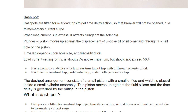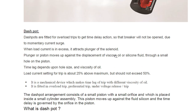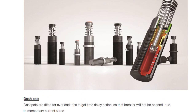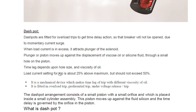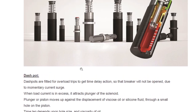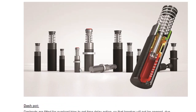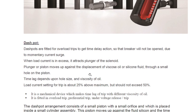Dashpot is a safety device. When load current is in excess, it attracts the plunger to the solenoid. The plunger or piston then moves up — as you can see in the diagram. The plunger or piston moves up against the displacement of viscous oil or silicone fluid through a small hole on the piston. There is a small hole provided on the piston, which may not be clearly visible in this diagram.